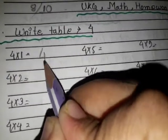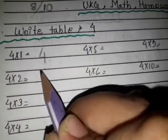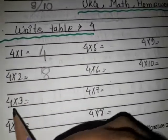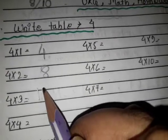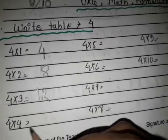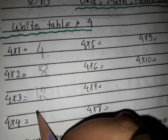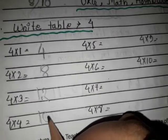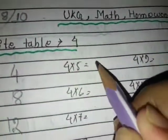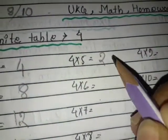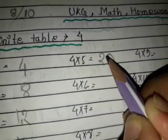4 1's are 4. 4 2's are 8. 4 3's are 12. 4 4's are 16. 4 5's are 20.